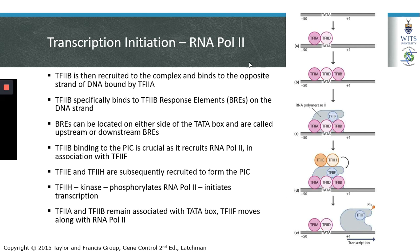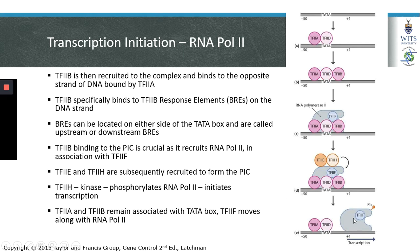Binding of TF2B to the pre-initiation complex is a crucial step, as it is TF2B that recruits RNA polymerase 2 to the complex. RNA polymerase 2 binds to the pre-initiation complex in combination with transcription factor 2F. Recruitment of transcription factor 2H then results in phosphorylation of RNA polymerase 2, at which point it begins to transcribe RNA. Transcription factor 2F remains associated with RNA polymerase during the process of transcription.